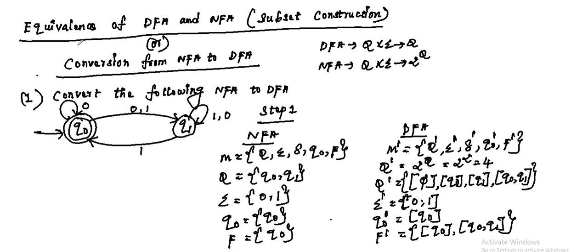Let us discuss equivalence of deterministic finite automata and non-deterministic finite automata, subset construction method, or conversion from NFA to DFA. In deterministic finite automata, a set of states looking at an input symbol goes to only one state, whereas in non-deterministic finite automata, a set of states looking at the input symbol can go to n number of states, that is 2 raised to the power Q.